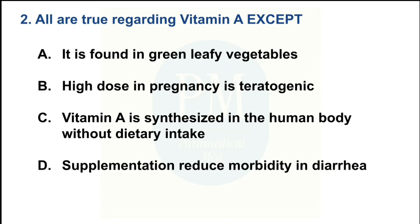All are true regarding Vitamin A except: Option A — it is found in green leafy vegetables; Option B — high dose in pregnancy is teratogenic; Option C — Vitamin A is synthesized in the human body without dietary intake; Option D — supplementation reduces morbidity in diarrhea. The correct option is Option C: Vitamin A is synthesized in the human body without dietary intake.